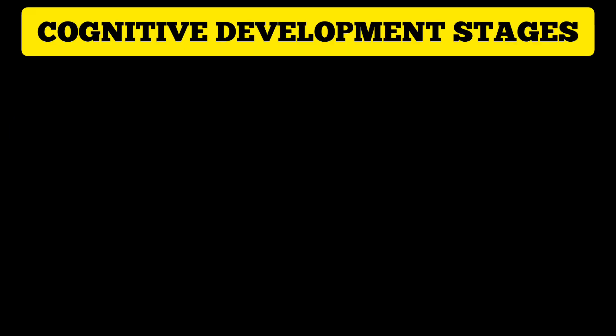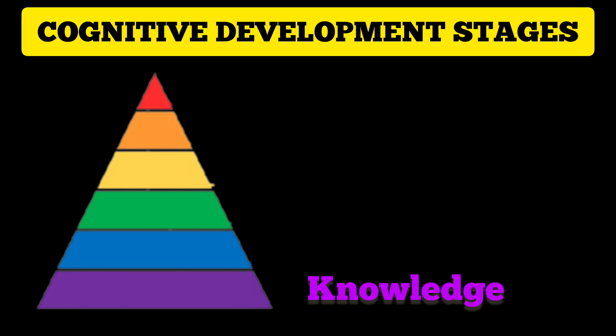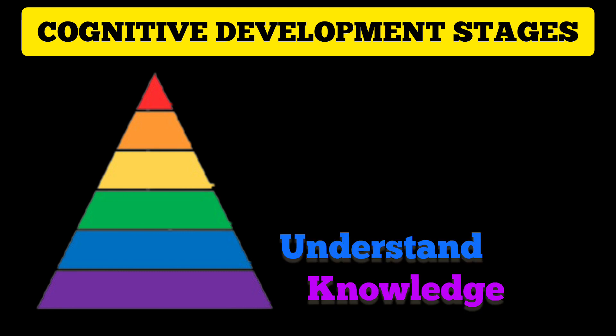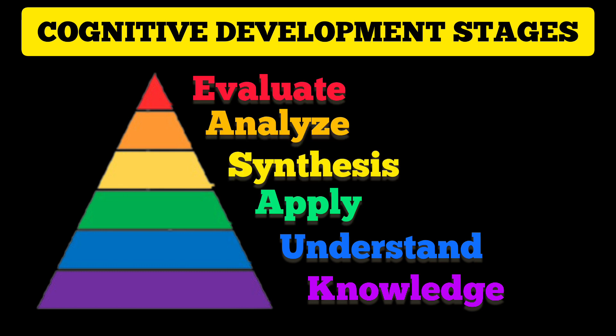Cognitive development stages: first, we receive an object or thing from the outside world, we understand it, we apply it, we synthesize it, we analyze it, and we evaluate it. In the beginning, we are only at the level of understanding and do not reach the level of application. Gradually it develops. This is cognitive development.